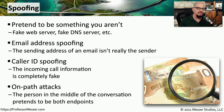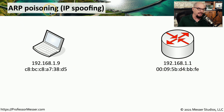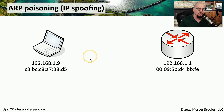We also demonstrated how spoofing can be used to create an on-path attack, where the attacker sits in the middle of a conversation and uses spoofing to create that path. In a previous video, we talked about ARP poisoning, where the attacker uses IP spoofing to accomplish this poisoning.